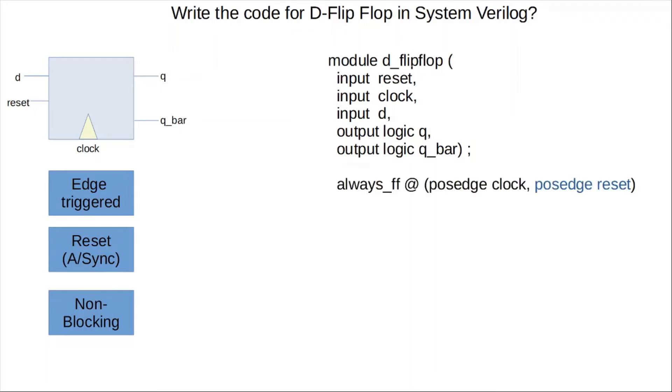All righty, next in System Verilog we have a new construct which is always_ff, or flip-flop. This is equivalent to Verilog always @, but it clarifies the designer's intent to the tool. So always_ff is followed by the sensitivity list. So you have, like I said, is it positive edge clock or negative edge clock? That's something to determine. Depending on that, you're going to choose which edge you're going to use for the clock.